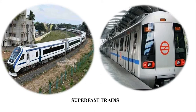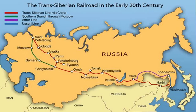Super-fast trains have been introduced to make journeys faster. Some of the latest developments in railways are the Vande Bharat Express, metro trains, etc. Indian Railways is also working on the construction of bullet trains. The Trans-Siberian Railway is the longest railway system, connecting St. Petersburg in Western Russia to Vladivostok on the Pacific Coast. In the given map, you can see the Trans-Siberian Railroad.